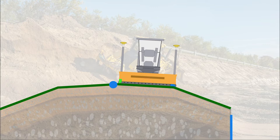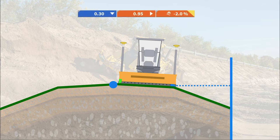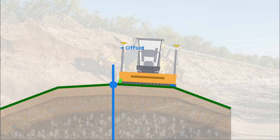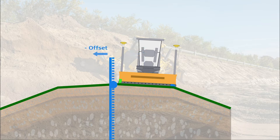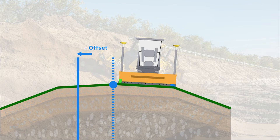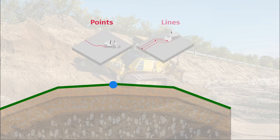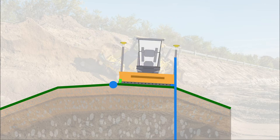The horizontal distance between the chosen tool point and the offsetted line determines the sideways deviation. A positive offset value will push the active side reference to the right, while a negative offset will push it to the left relative to the direction of the line. You can use points and lines as side references, and you can also set the offset to the current distance to the side tool point using the equal sign.